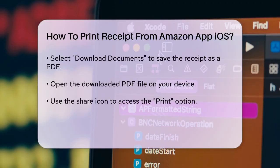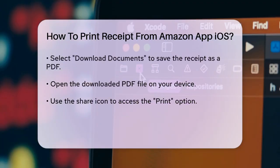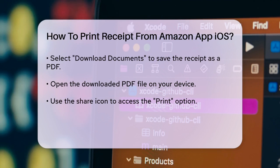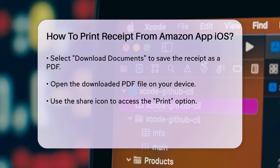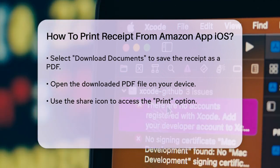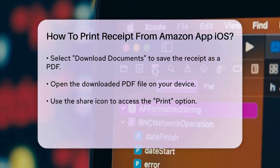This will download the receipt as a PDF file to your device. To print the receipt, you can use the built-in printing feature on your iOS device. Open the downloaded PDF file and then use the Share icon, which looks like a box with an arrow coming out of it, to find the Print option.